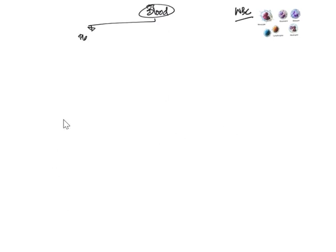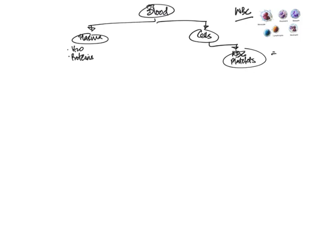There are two major constituents of blood. We have the fluid component, which is known as plasma, and this contains water and proteins. And of course, we have the cellular component, which includes two main components in turn: the non-nucleated cells, such as red blood cells and platelets, important for oxygen carrying and clotting, and the nucleated cells, which are white blood cells, also known as leukocytes.